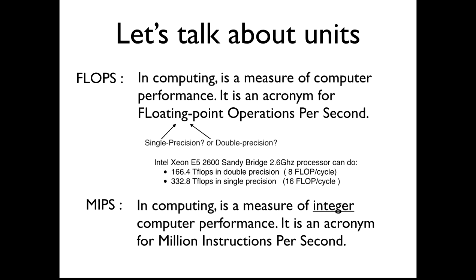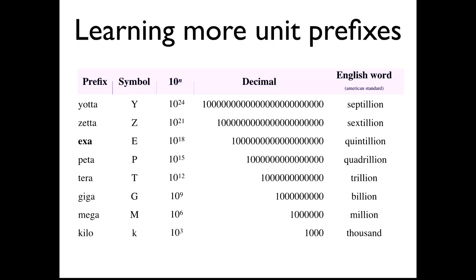In science, you really want to do double precision, because double precision gives you more decimals and therefore results can be more precise than with single precision.